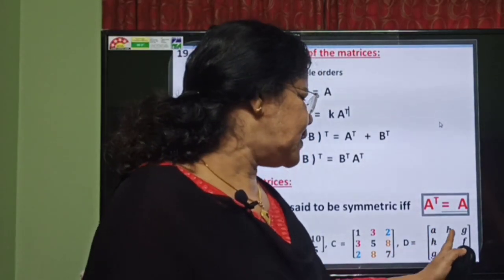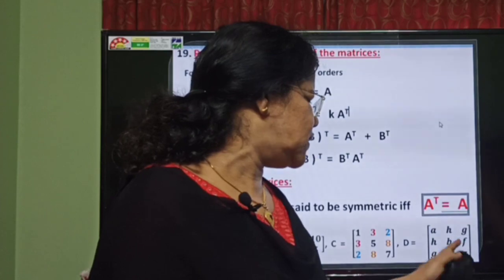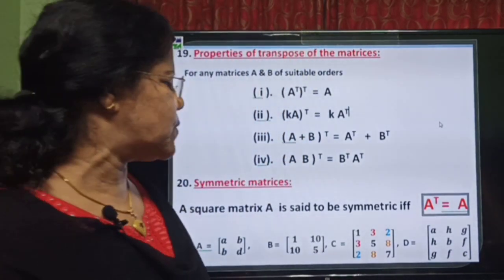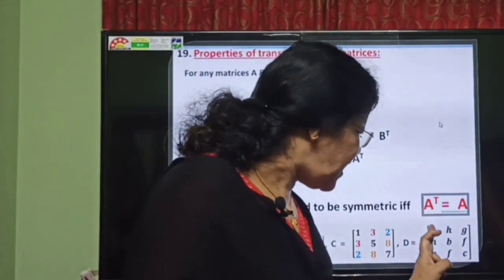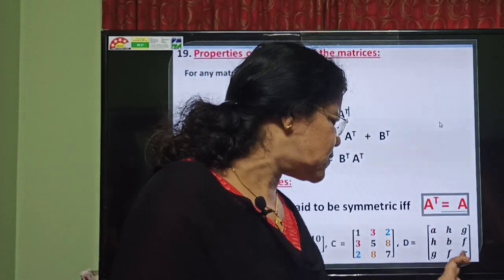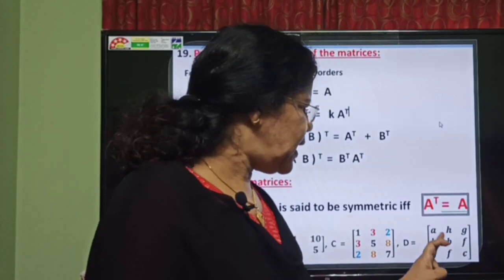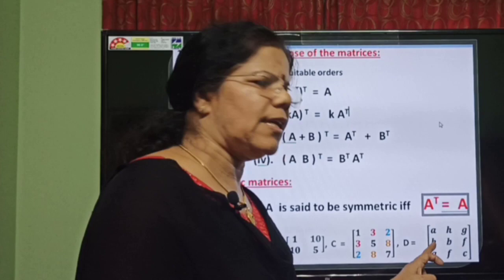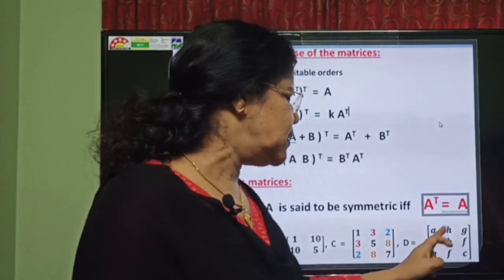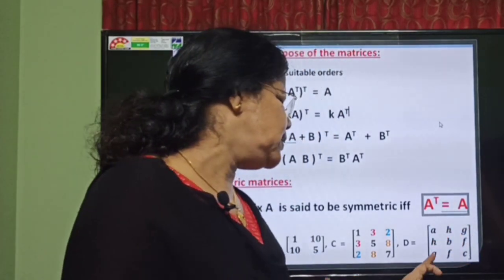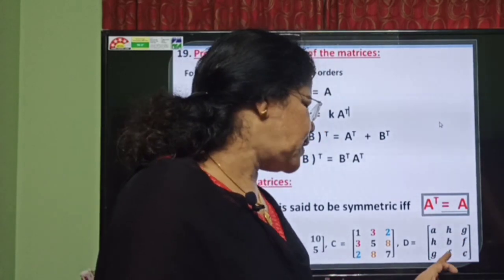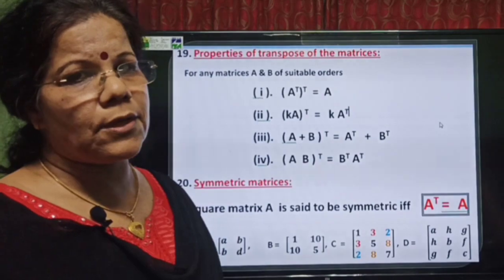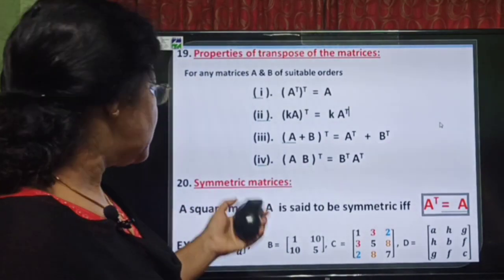In general, matrix B is written with entries A, H, G / H, B, F / G, F, C. To frame a matrix equal to its transpose, fix any numbers or letters on the diagonal — A, B, C. Then whatever element you fix at a position, write the same element at the diagonally opposite position. Here G is written diagonally opposite to G. This is the method of getting a symmetric matrix.